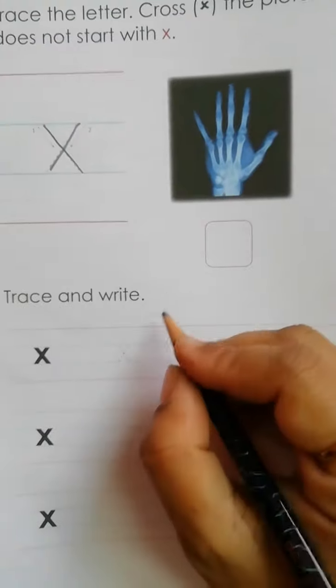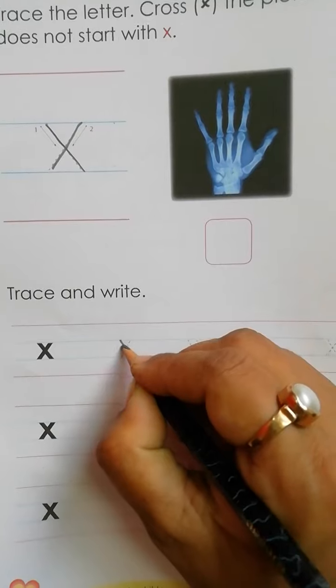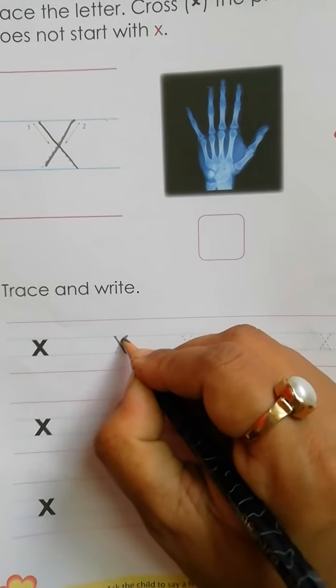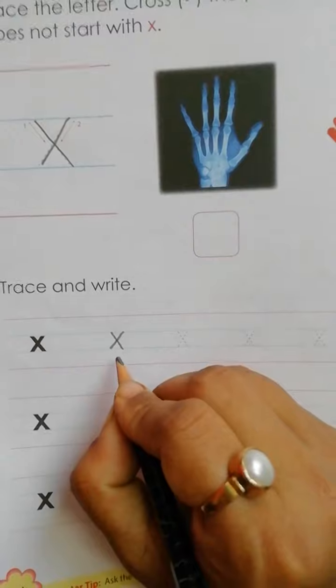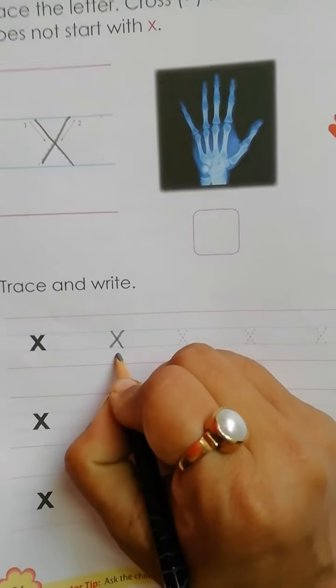Between two blue lines, one slant, again slant. This is small letter x.